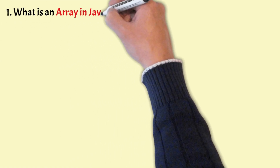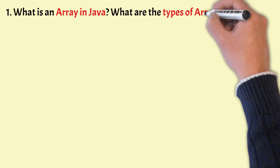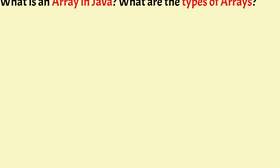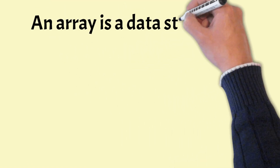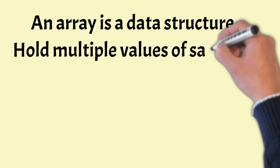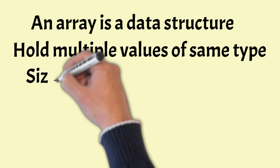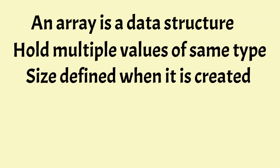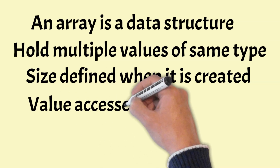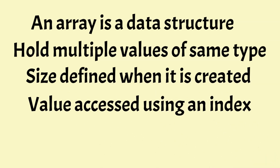Let's begin with the first question: What is an array in Java, and what are the types of arrays? An array is a data structure that can hold multiple values of the same type. The size of an array is defined when it is created and cannot be changed — meaning the size cannot be increased or decreased once declared. Each value in an array can be accessed using an index that starts from 0.